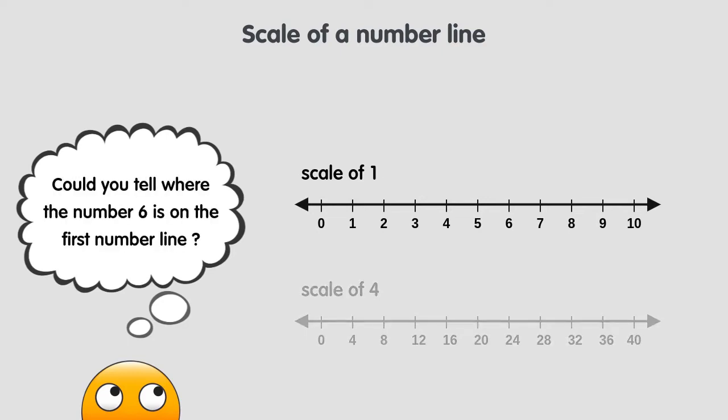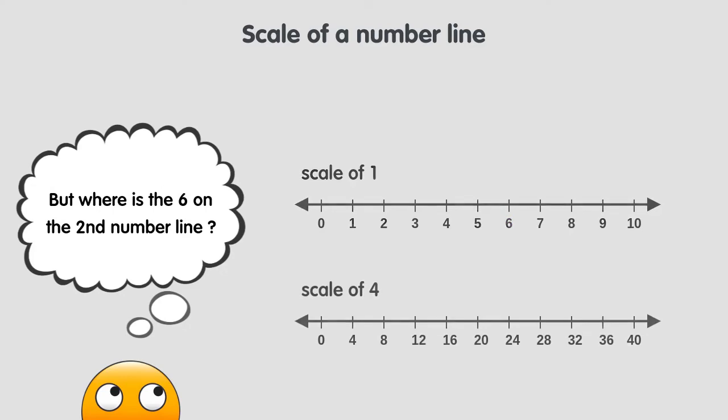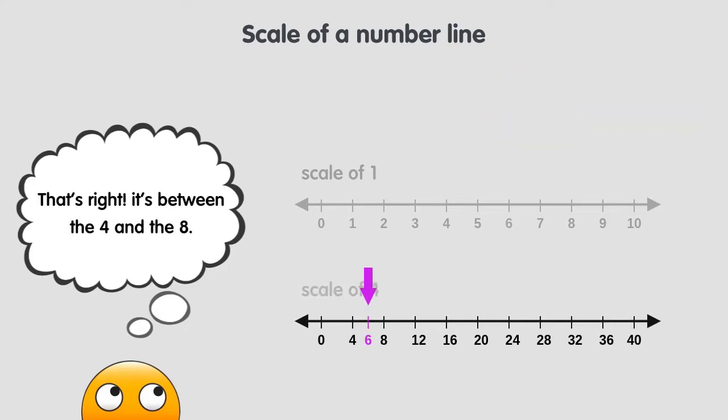For example, could you tell where the number 6 is on the first number line? As you can clearly see, the number 6 is here on this mark. And where is the 6 on the second number line? That's right. It's between the 4 and the 8.